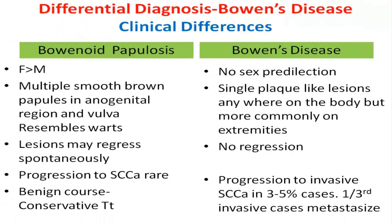Bowenoid papulosis has a female predilection and presents as single or multiple brown papules with sharp borders in the anogenital region, resembling genital warts. While Bowen's disease has no predilection for any sex and presents as patches or plaques anywhere on the body, but more commonly on the extremities.